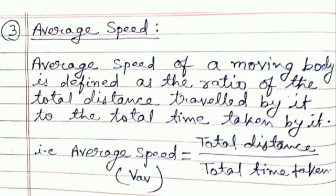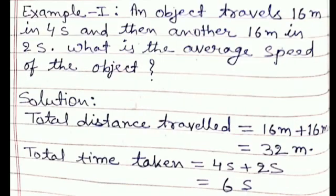Moving ahead, we will know average speed, which is very important. Based on this we will be solving several numerical problems. Average speed of a moving body is defined as the ratio of the total distance travelled by it to the total time taken. Mathematically, average speed = total distance moved / total time taken. To clear the concept, consider an example: an object travels 16 meters in 4 seconds and then another 16 meters in 2 seconds. We are supposed to calculate its average speed.